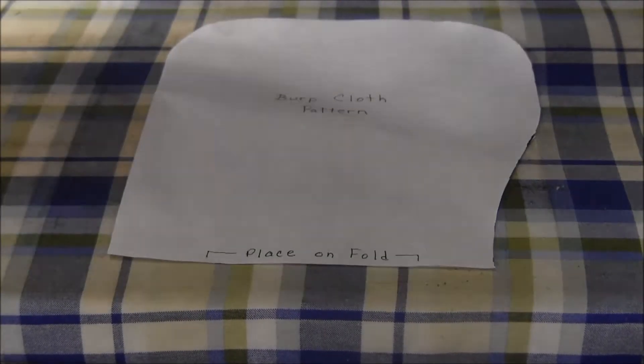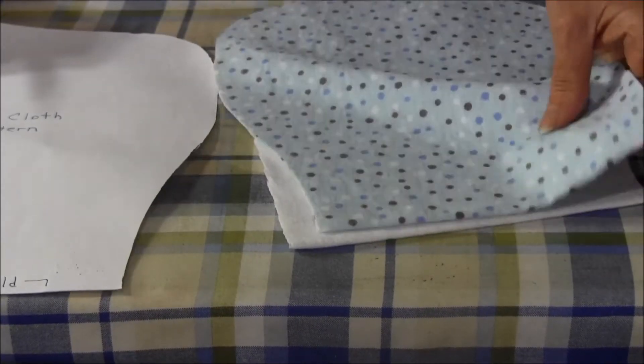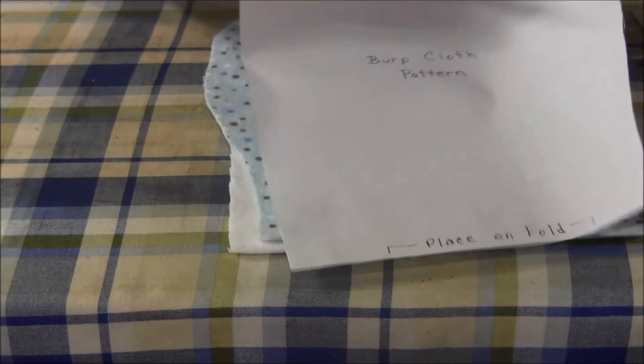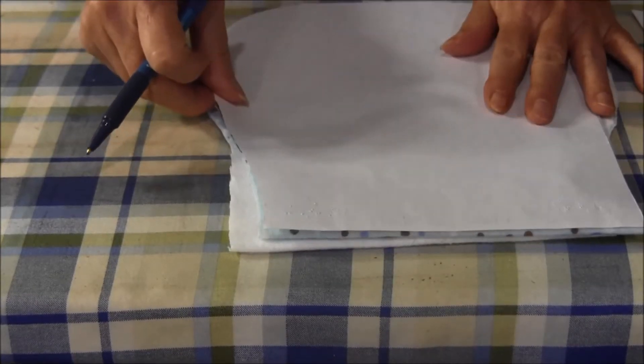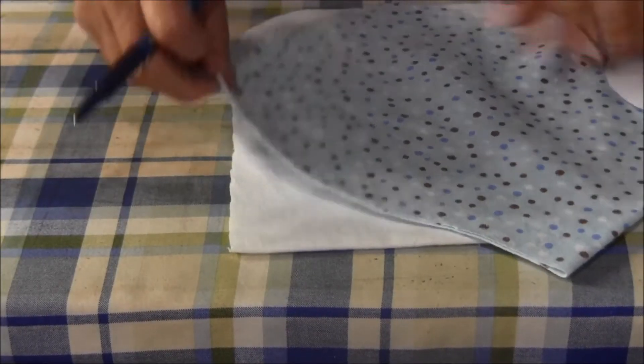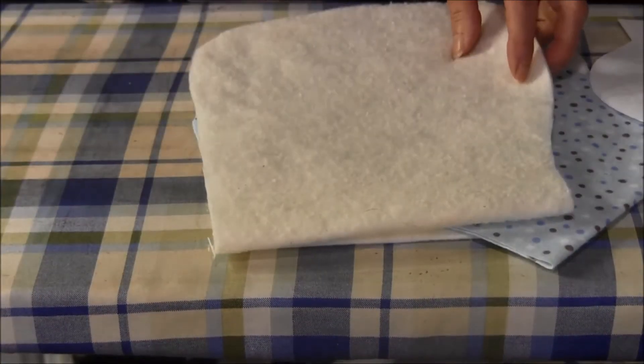You're going to cut two pieces of flannel. They can be the same color or different colors. I've already done it as you can see. It's this way because this is a straight edge. If you want your burp cloth to be a little more absorbent, you can use the cotton batting.